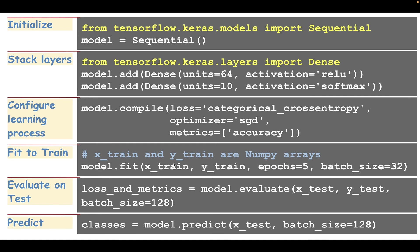Most of the work involves stacking layers — you'll need intuition for how to build layers: what activation functions to use, how many units to specify, and so on. This is an important part you'll get the hang of as you practice. The second key area is knowing what type of loss functions, metrics, and optimizers to use for a given type of problem.